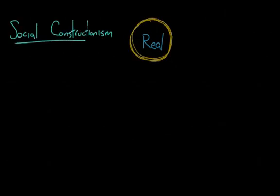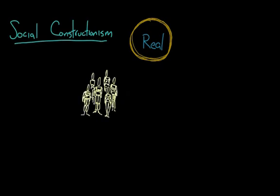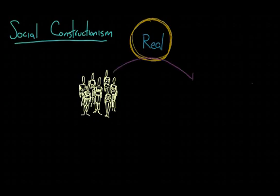Social constructionism is a theory that knowledge and many aspects of the world around us are not real in and of themselves. They only exist because we give them reality through social agreement.